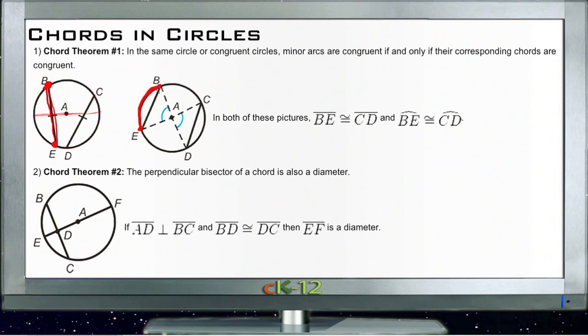So if we know, for instance, that BE, the chord right here, is equal to CD right here, then we know that the arc CD is congruent to the arc BE.